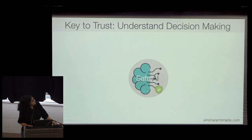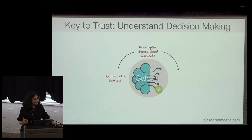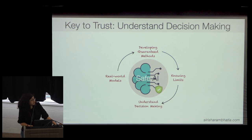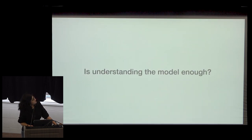To summarize: we can go about building trust in a theory-guided way — developing exact guarantees, knowing their limits, and understanding decision making. The other way is through interpretability, explainability, and domain priors. But is that enough?